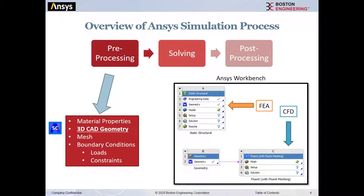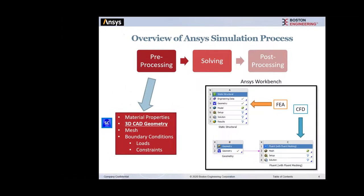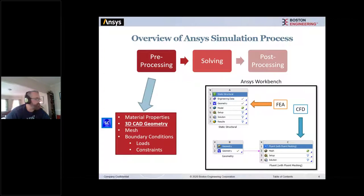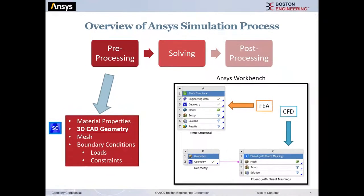Pre-processing — all the work we do prior to hitting the solve button — is the most important work. When doing services for customers or auditing a process, I can tell you that fifty percent of the time spent in simulation is in pre-processing. Solving and post-processing can be automated quite heavily. Pre-processing still requires a human at the laptop. It includes applying material properties, bringing in CAD geometry, creating a mesh, and adding loads, constraints, and boundary conditions.